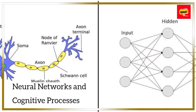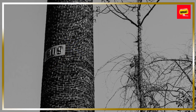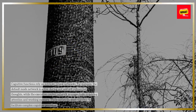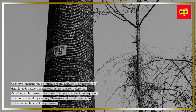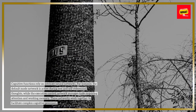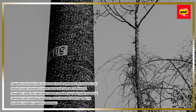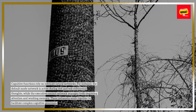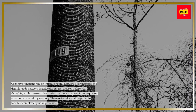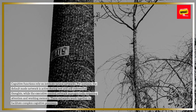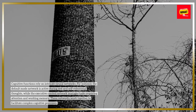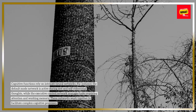Cognitive functions rely on intricate neural networks. For instance, the default mode network is active during rest and self-referential thoughts, while the executive control network manages tasks requiring attention and working memory. These networks work together to facilitate complex cognitive processes.